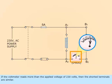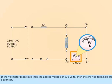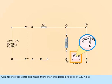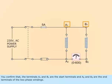If the voltmeter reads more than the applied voltage of 230 volts, then the shorted terminals are similar. If the voltmeter reads less than the applied voltage of 230 volts, then the shorted terminals are dissimilar. Assume that the voltmeter reads more than 230 volts. You confirm that terminals A1 and B1 are the start terminals, and A2 and B2 are the end terminals of the two-phase windings.